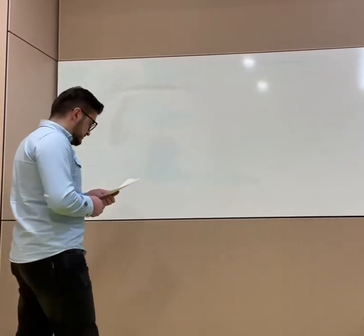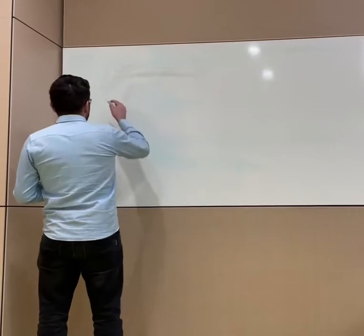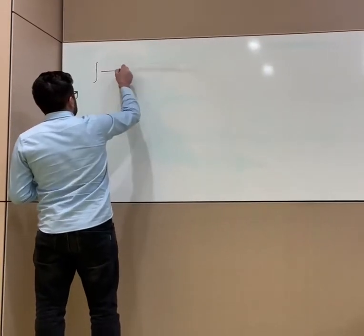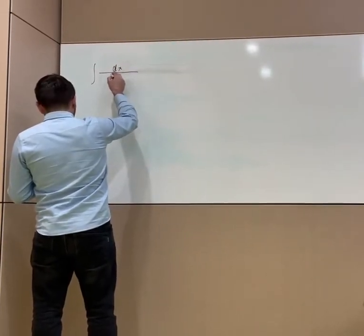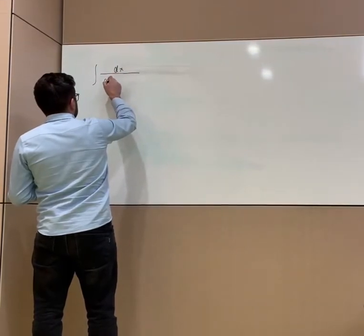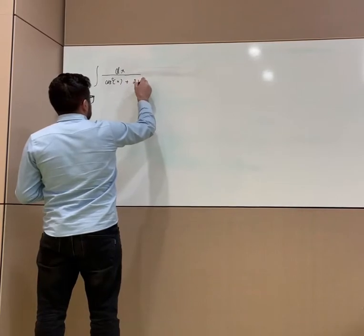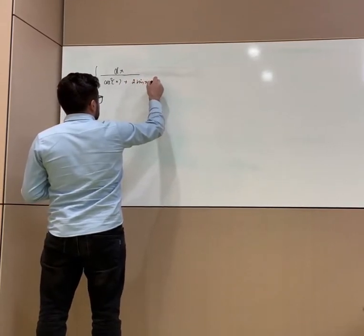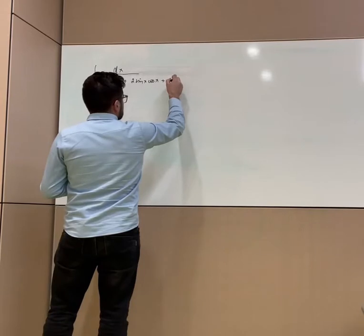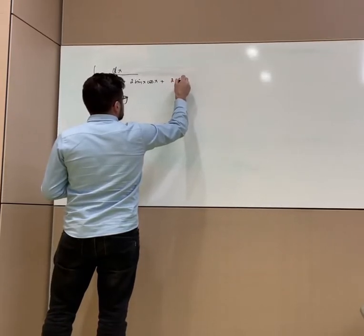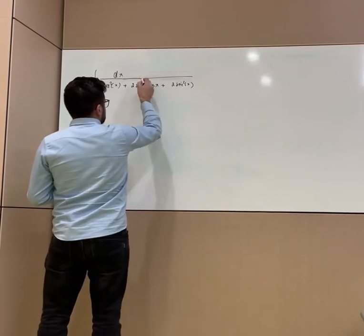Let's write down the formula on the board. So, this is my integral: dx over cosine squared x plus 2 sine x cosine x plus 2 sine squared x. This is my integral.